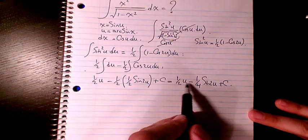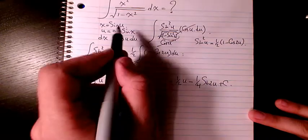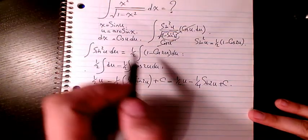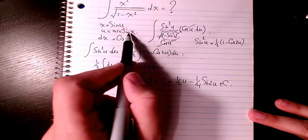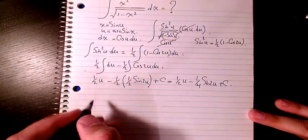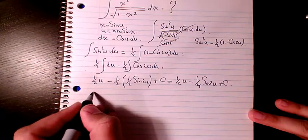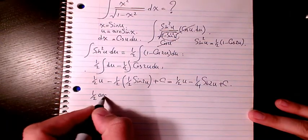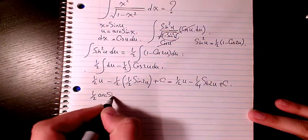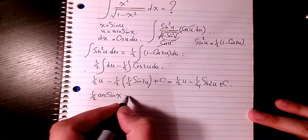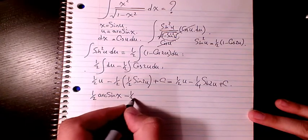Now I need to substitute back — instead of u I can write arc sine x. So it's going to be 1 over 2 arc sine x minus 1 over 4...